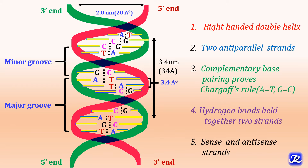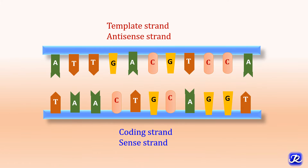Both strands of DNA can act as sense and antisense strands. The template strand is also called the antisense strand and is the strand that is transcribed or copied into the RNA molecule. The other strand is called the sense or coding strand. It is noteworthy that each strand of DNA can act as a template strand for the synthesis of its complementary strand. Hence, the hereditary information is coded in the sequence of bases of either strand.